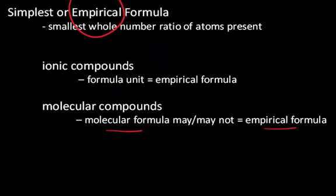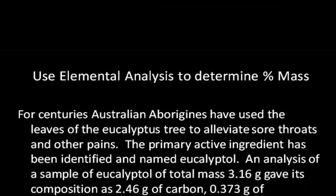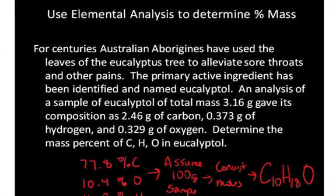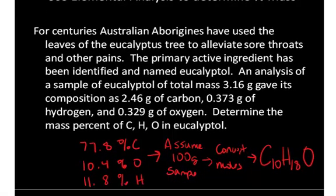Let's take a look at some data. In this case, elemental analysis was used to determine the percent mass or percent composition of eucalyptal. From this elemental data, it was found that the elements carbon, oxygen, and hydrogen were present in the compound in these percentages.